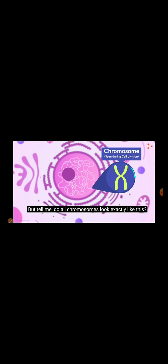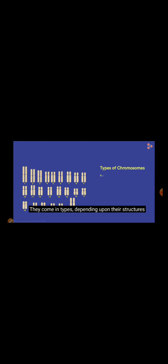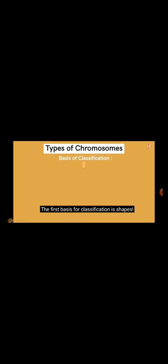But tell me, do all chromosomes look exactly like this? Do all the 46 chromosomes look the same? If yes, then why do we say that there are 23 pairs of chromosomes? What helps us categorize these chromosomes as pairs? Well, all chromosomes are not exactly like one another. They come in types depending upon their structure or shapes and functions. The first basis for classification is shapes. We know this is the structure of a typical chromosome. And is this a single chromosome? That's right. The difference is that this chromosome is not duplicated. While this one has a duplicated copy attached to itself.